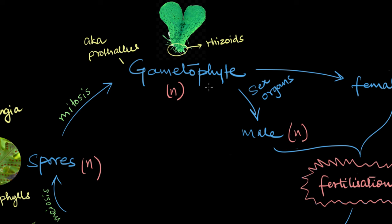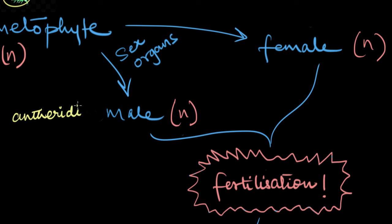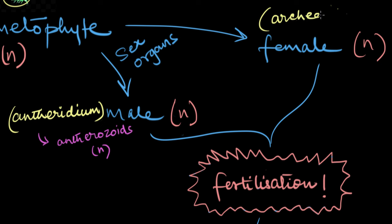The gametophyte exclusively bears the sex organs of the plant, meaning this stage is responsible for the production of haploid gametes. The spore from a homosporous plant will give rise to a bisexual gametophyte, meaning it will have both male and female sex organs. Meanwhile, the spore from a heterosporous plant will give rise to two different gametophytes — a male gametophyte with the male sex organ only, and a female gametophyte with the female sex organ only. The male sex organ, called the antheridium, produces flagellated male gametes called antherozoids, while the female sex organ, called the archegonium, produces a single egg cell.